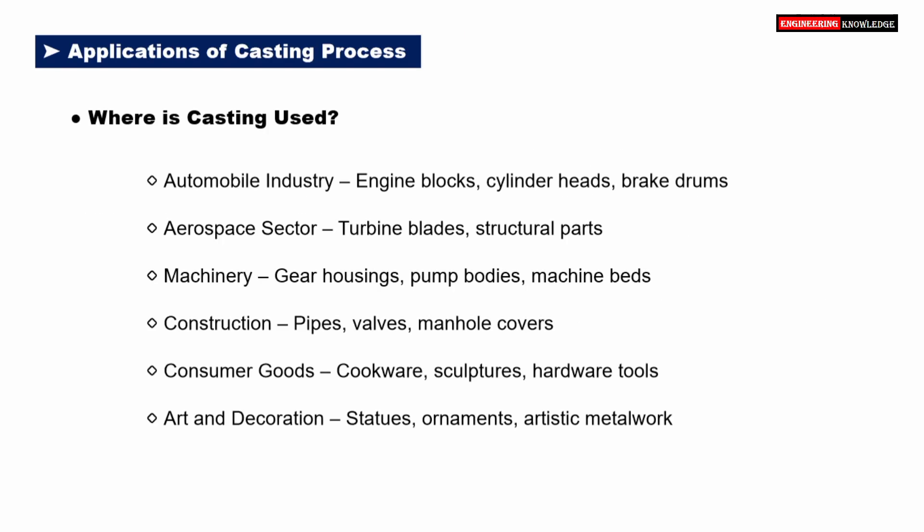Casting is a highly versatile manufacturing method used across a wide range of industries. In the automobile industry, casting is used to manufacture engine blocks, cylinder heads, and brake drums — all large, heavy, and complex components. In the aerospace sector, casting is used for turbine blades and structural parts where strength, precision, and lightweight construction are crucial. For machinery, components such as gear housings, pump bodies, and machine beds are cast because they require strength and rigidity, often in bulk quantities.